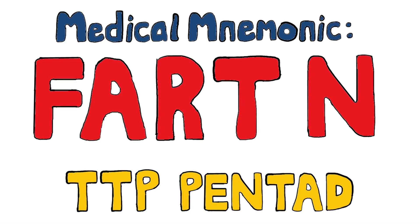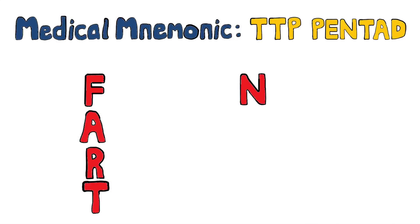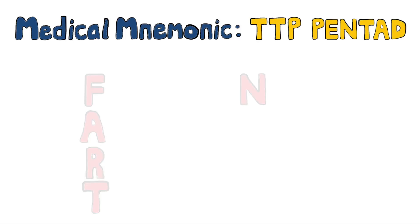FAT-RN, or the more entertaining FAT-N, are medical mnemonics used to remember the pentad of signs and symptoms seen in thrombotic thrombocytopenic purpura, a condition where the enzyme ADAM-TS13 isn't functioning correctly, often due to antibody formation against it.